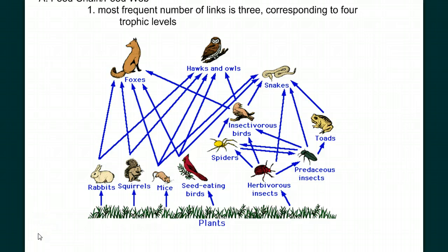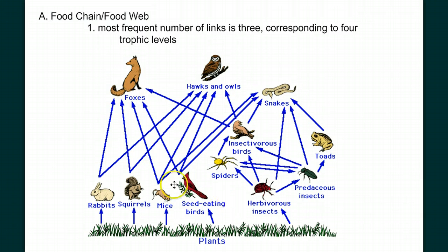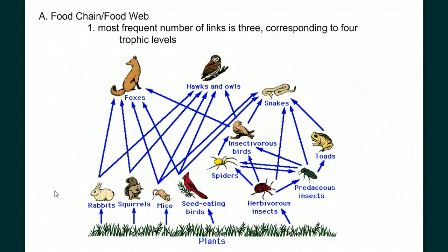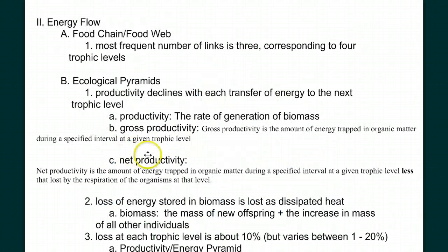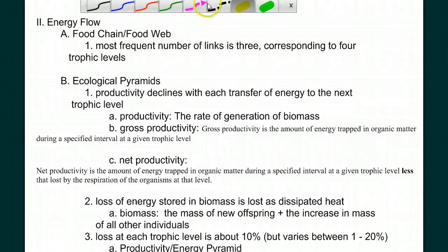Energy flow looks linear, but in ecosystems, food webs are more likely than food chains — there are branches, and an organism can occupy more than one trophic level. For example, when you eat a hamburger with lettuce, you are both a primary consumer for eating the lettuce and a secondary consumer for eating the beef. Because each energy transfer is inefficient, we have less energy available at each trophic level, which impacts the amount of biomass that can be made at each level and, therefore, the number of individuals. This gives us ecological pyramids as we look at productivity.